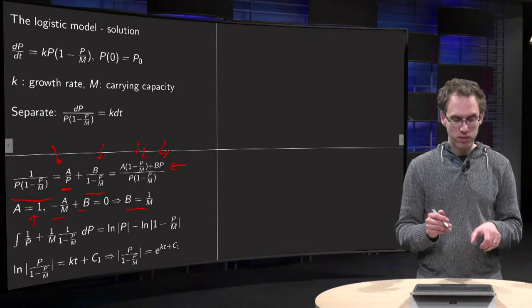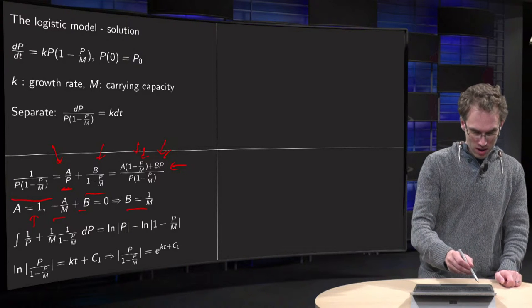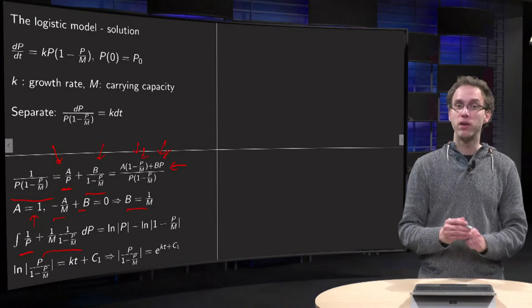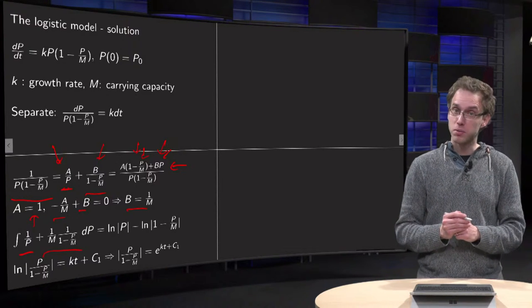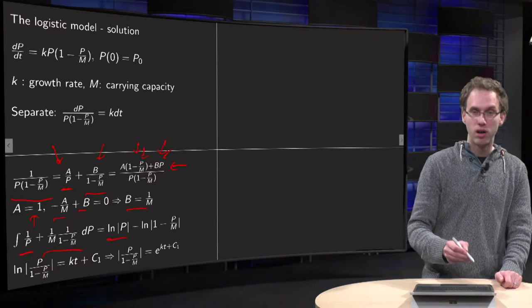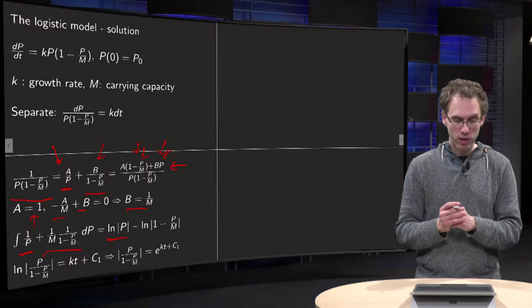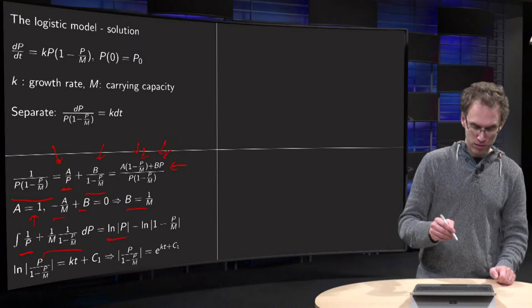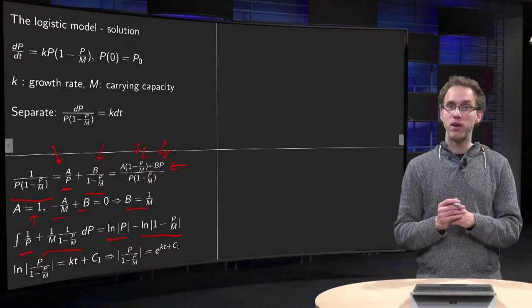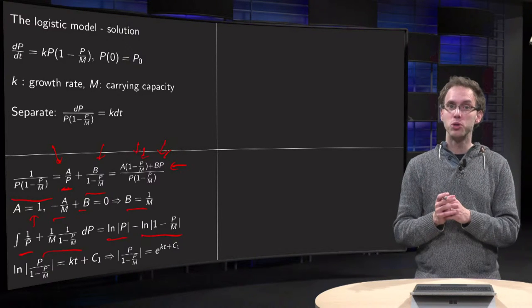So that means that we can integrate A over P plus the other term with 1 over M in front with respect to P. The derivative of 1 over P equals the log of P with absolute value, and the derivative of the other term is the log of (1 minus P over M), which is for example the substitution rule.